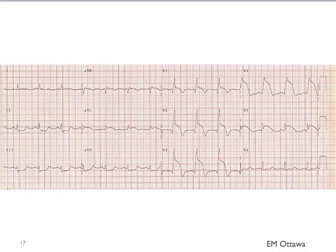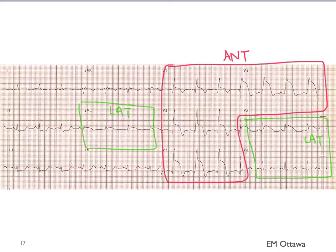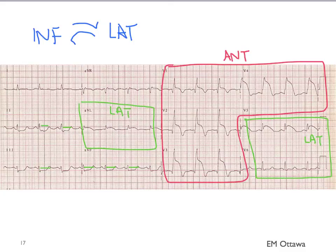What about this ECG? There are ST elevations in the anterior and lateral leads. Do you see any ST depression? You can see ST depressions in leads 2, 3, and AVF, corresponding to the inferior part of the heart. That makes sense because the inferior part reciprocates with the lateral ST changes. In a standard 12-lead ECG we don't do posterior leads, but with a 15-lead we would see ST depression in the posterior leads.